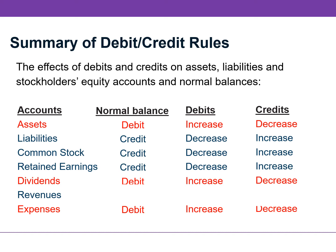As an acronym to help you remember the debit and credit rules is DEAD, where D is DEBIT. For expenses, assets, and dividends, the normal balance is a debit, which means debits will increase these accounts and credits will decrease them.